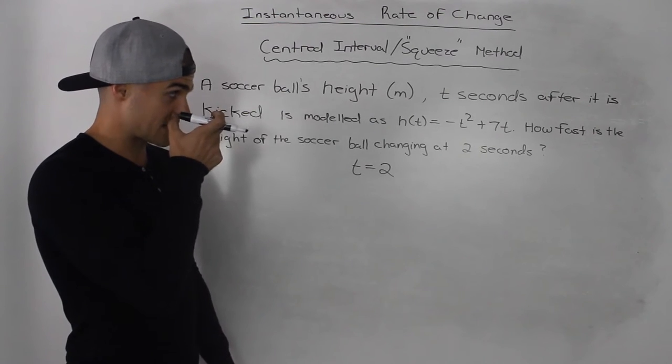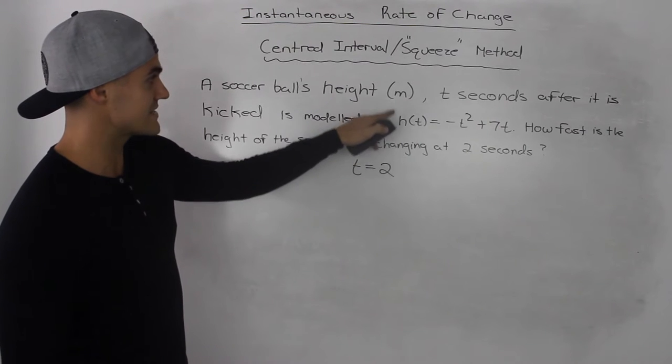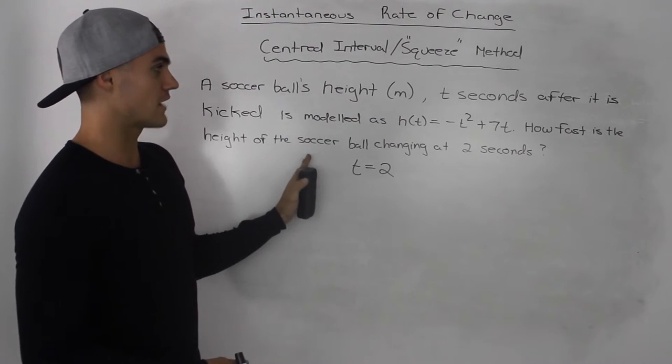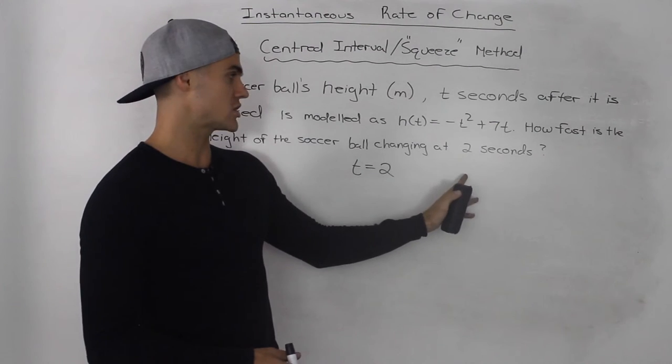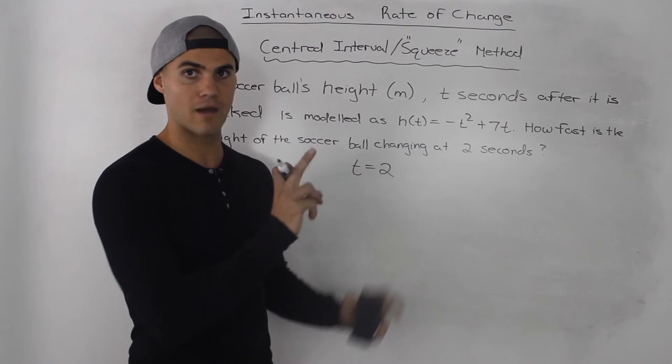The first thing to recognize is that they're asking for a rate of change because they're asking for how fast the height is changing. The second thing to notice is that they're asking for an instantaneous rate of change because they're asking for it at a specific point in time, at one point.